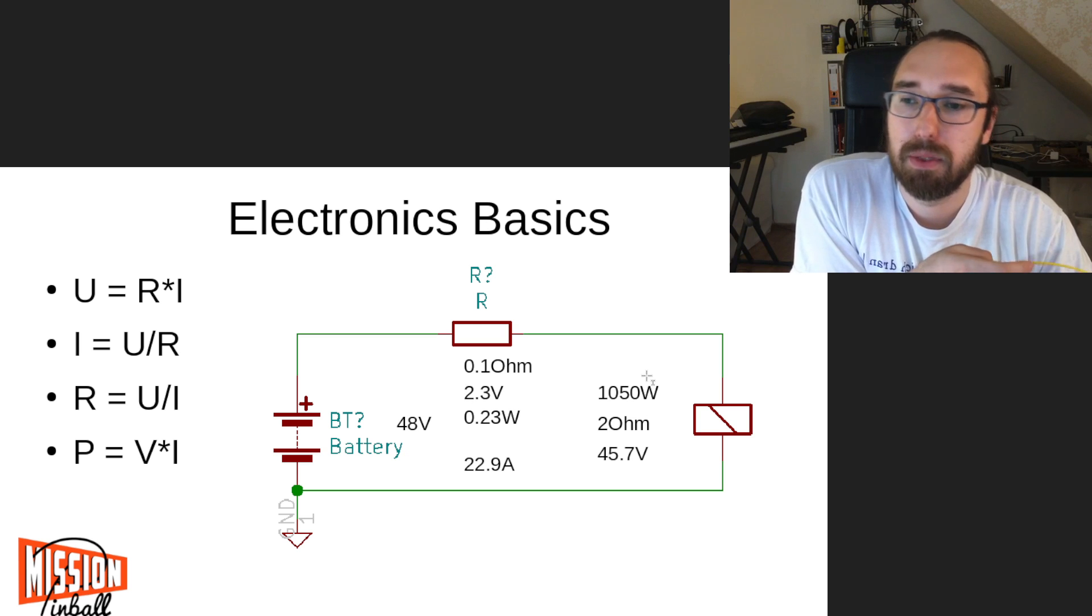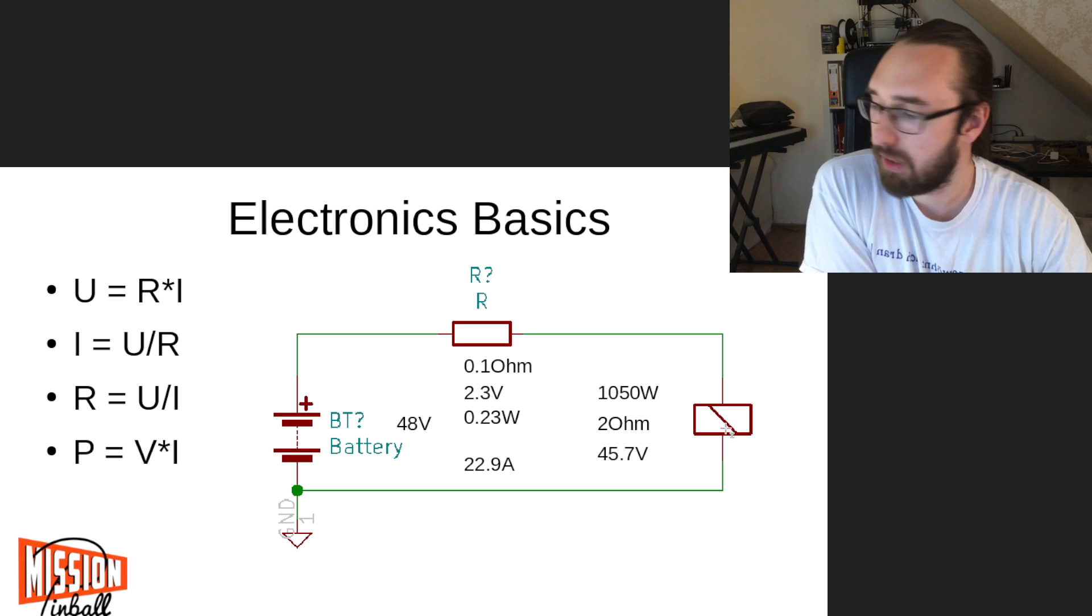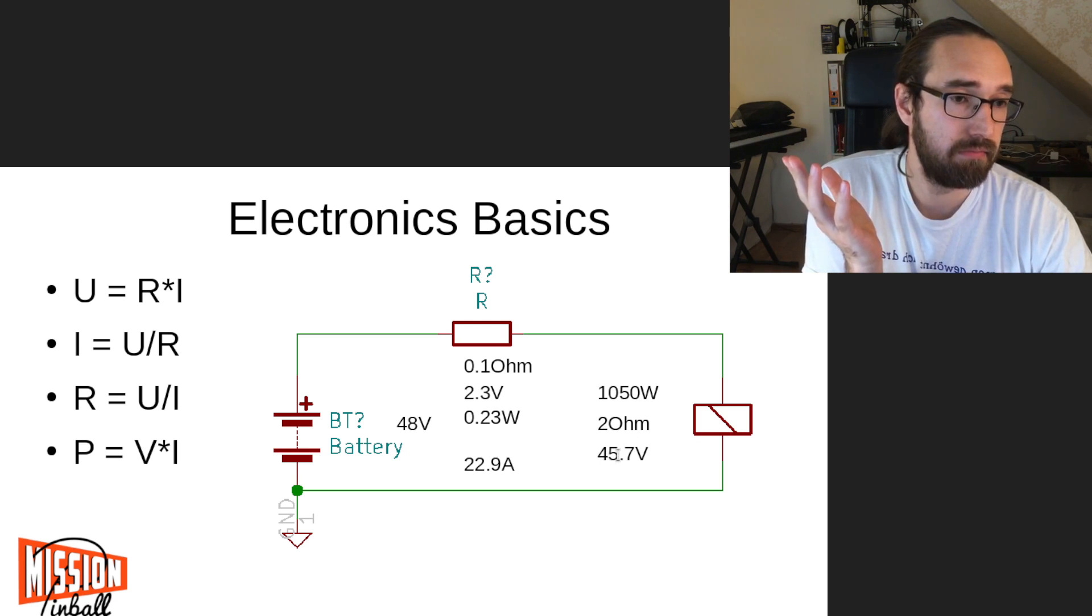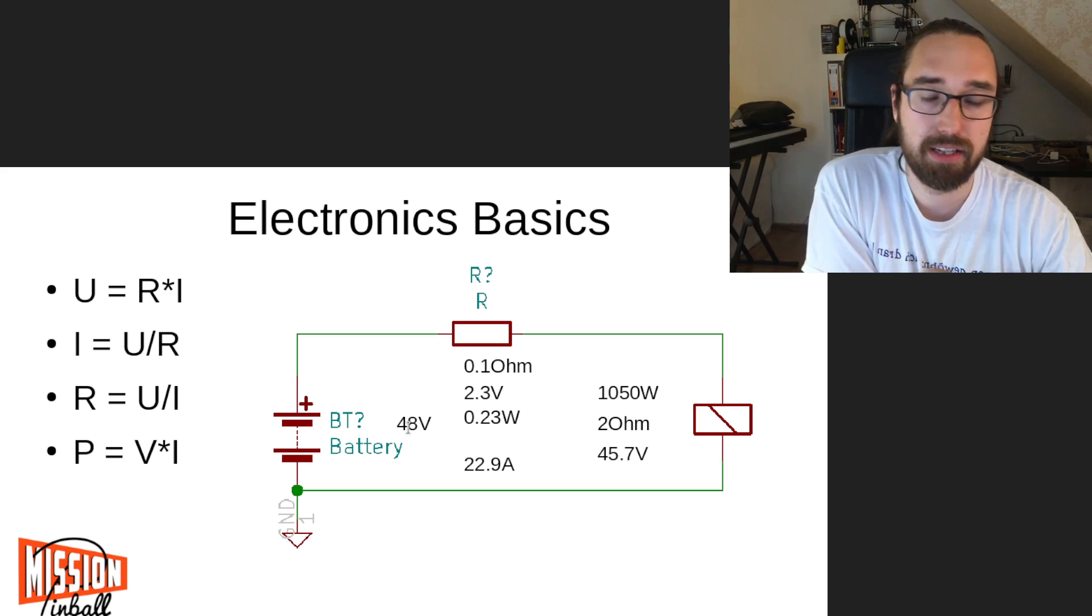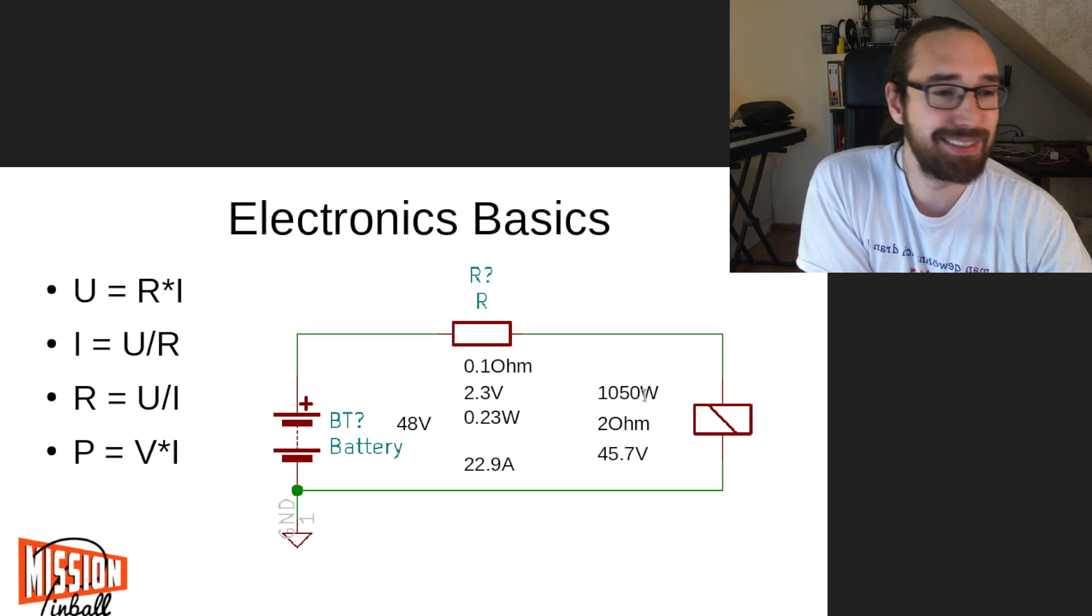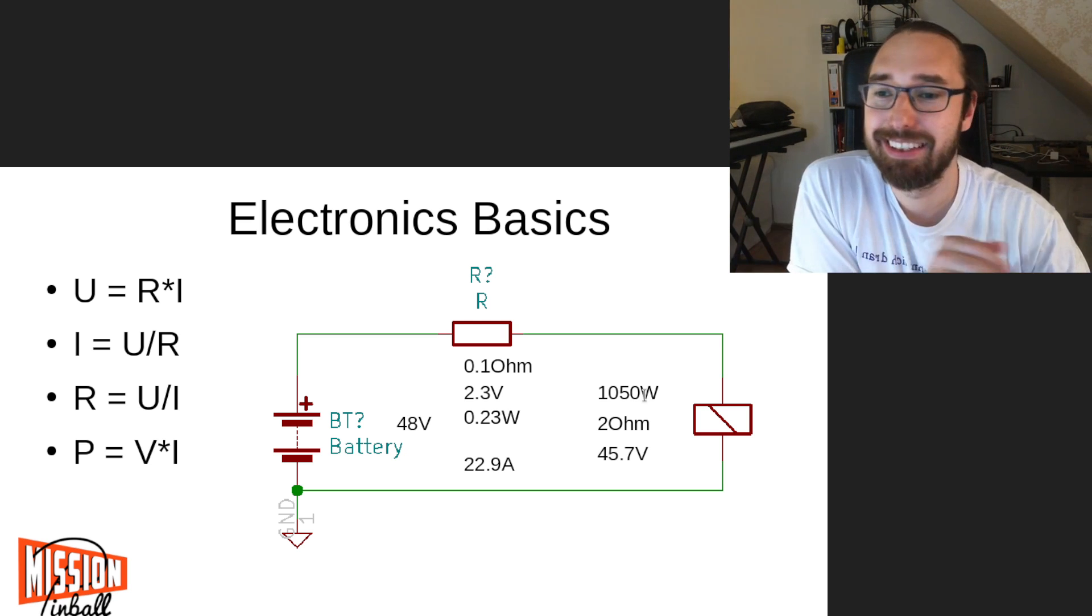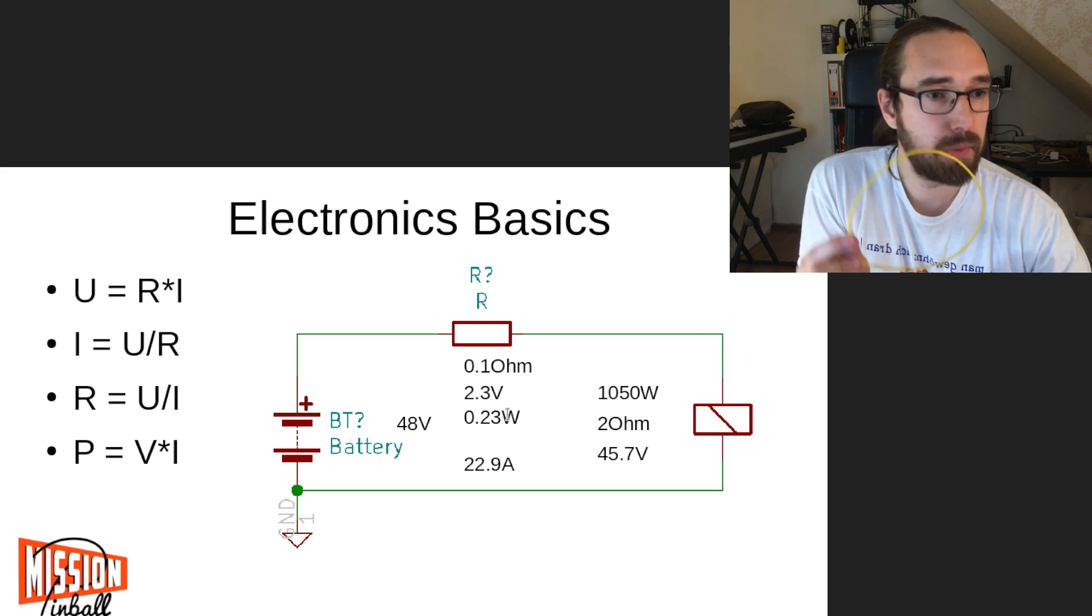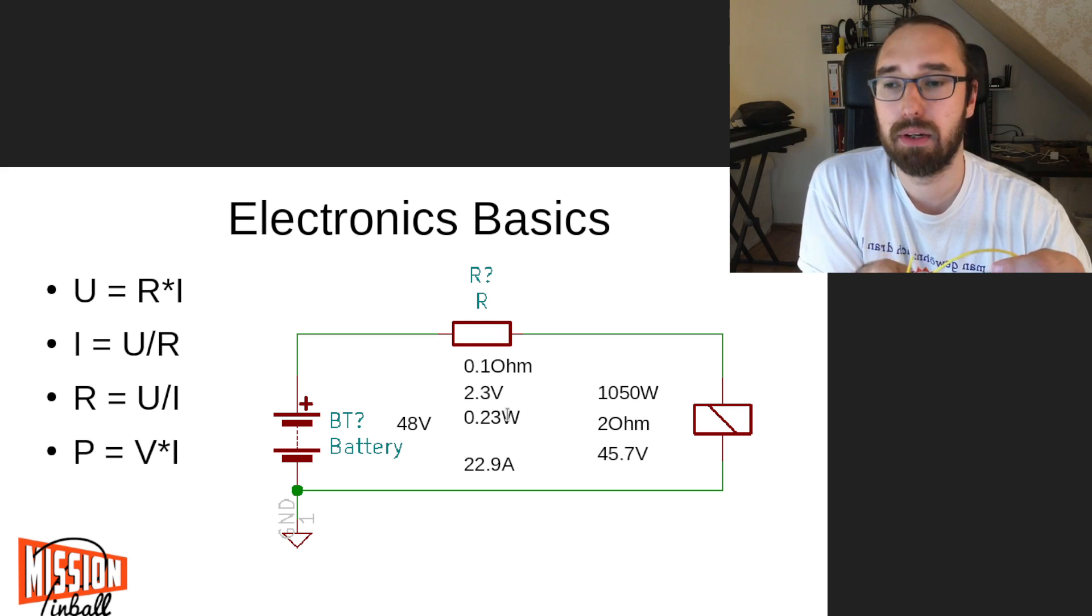So this wire will lose voltage for you because there's current flowing. Then we can again see that the remaining current will go to the coil, and this coil will now have 45 volts only - that's a little bit less than 48. It will still generally 1,050 watts of power, so it gets very, very hot. But the wire will also have 0.23 watts of heat, so the wire will get warm. It won't burn, won't get really hot, but it will get warm.